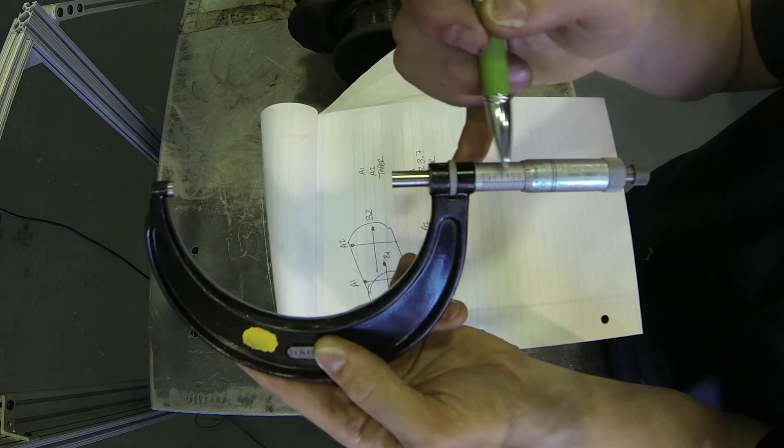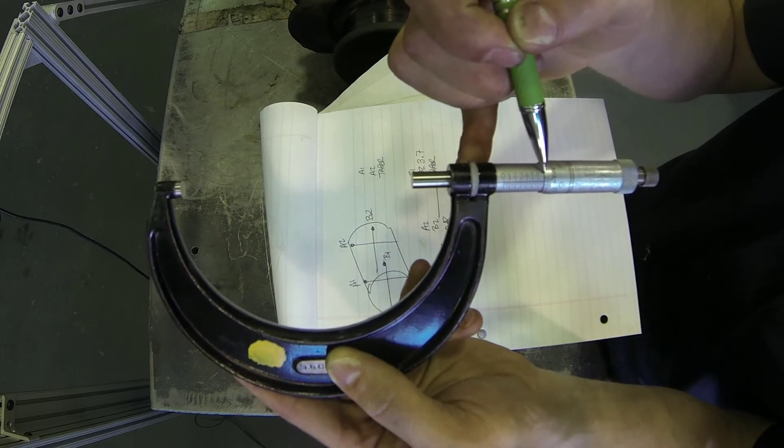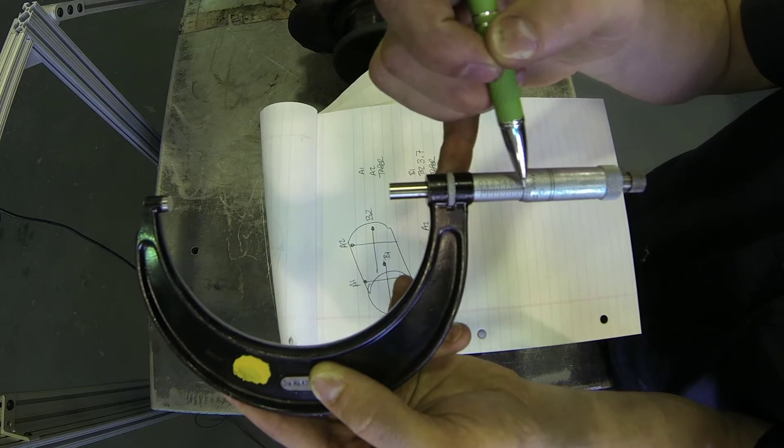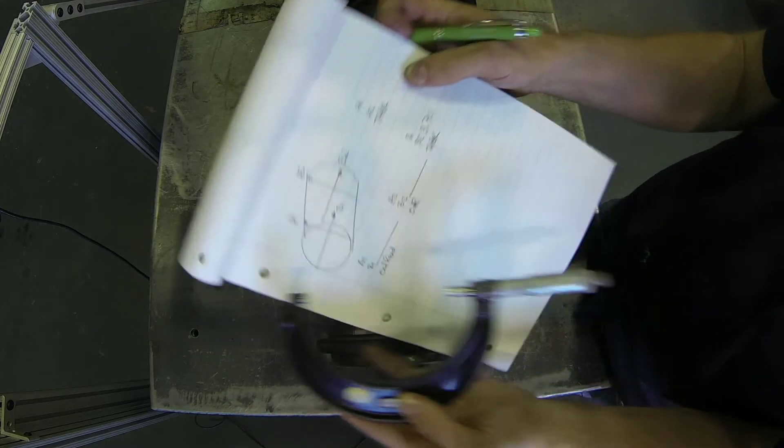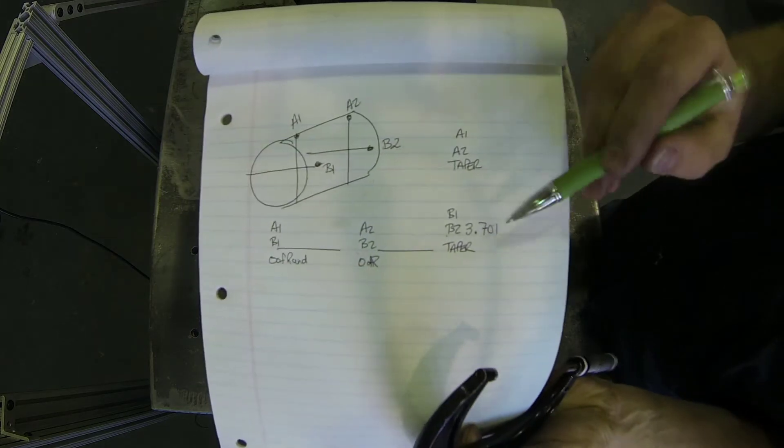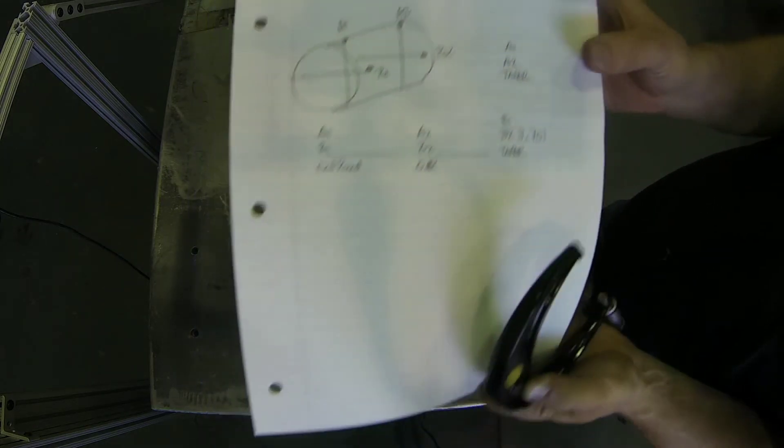Then we would look how many index lines—well, none. We're not past the first small index line past the seven, but we do have a thimble measurement of one. So that means my journal at the B2 position is actually going to be 3.701.